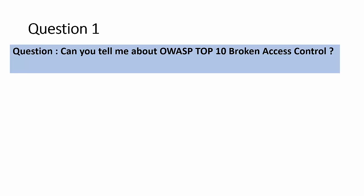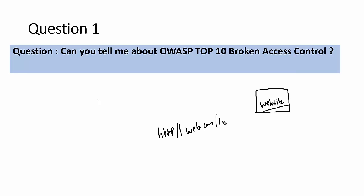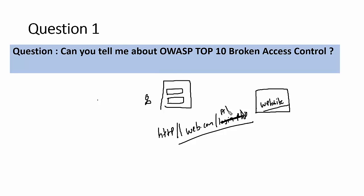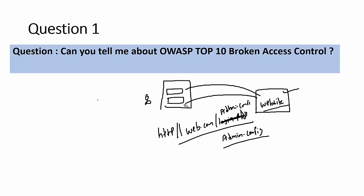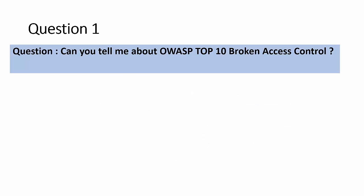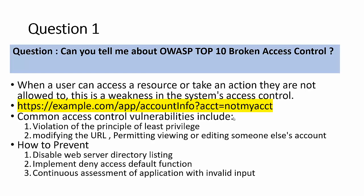For example, I have a website and I type http://web.com/login.php — as a user I can see the login page. Now instead, I type admin.config and hit enter. If the website is vulnerable to broken access control, it redirects me with information about the admin configuration page — resources for which I don't have permission, due to weak access control configured on the server.